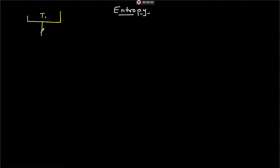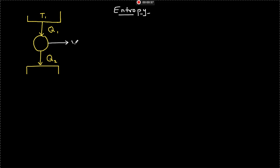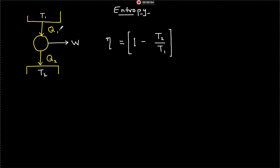At a higher temperature T1, the system absorbs heat Q1 and then it gives away heat Q2 to a lower temperature. This is what happens and you are extracting some work out of it. The efficiency, if you remember, is 1 minus T2 by T1. So you can see that efficiency of the heat engine depends only on the temperature.